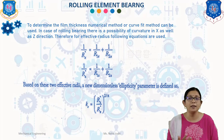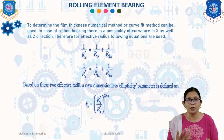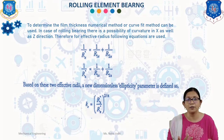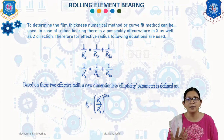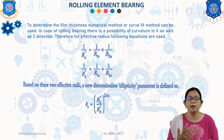In the case of rolling bearing, there is a possibility of curvature in the X as well as in the Z direction. Therefore, the effective radius is given by: 1/R_x = 1/R₁x + 1/R₂x, and 1/R_z = 1/R₁z + 1/R₂z, where R_x and R_z are the effective radii in X and Z direction. Based on these two effective radii, a dimensionless ellipticity parameter K_e is defined as K_e = (R_z / R_x)^(2/π).